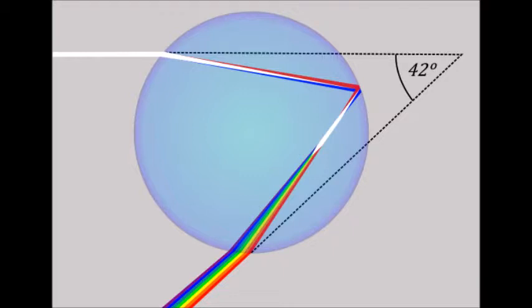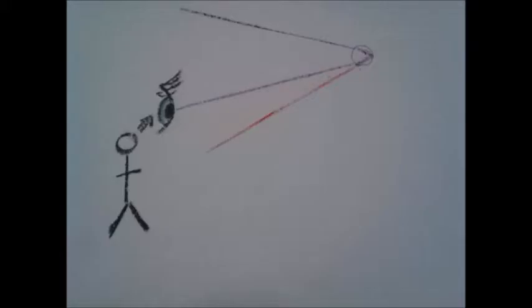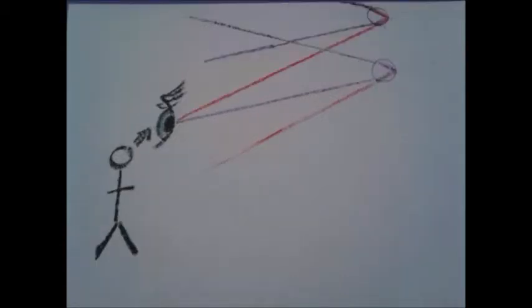Your next question might well be: why then are rainbows purple on the bottom and red on top? Although this may seem perplexing, the answer, once again, is quite simple. Your eyes only see one color from each drop of water. The water drops which are lowest in the sky reflect purple to your eye, exiting the drop on top. Water drops that are higher in the sky reflect red to your eye, exiting the drop on bottom. Because the red is reflecting off of drops that are higher in the sky, red appears to be on the top of the rainbow. Other colors reflect off of drops in the middle to fill in the rest of the rainbow colors.